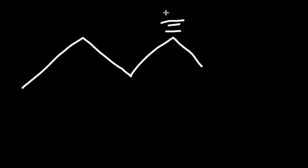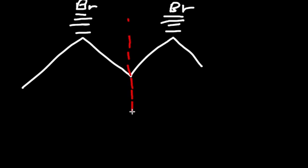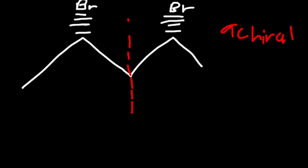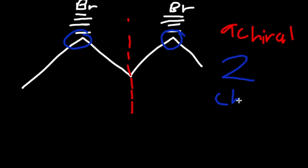Now if we have the same molecule but this time with a dash instead of a wedge, this is the same type of analysis. We draw the line of symmetry and we know it is achiral according to the rule — we see that both sides are the same, a dash is a dash. So they are achiral. We also have two chiral centers, because it is the same type of molecule — we have four different elements or groups attached.